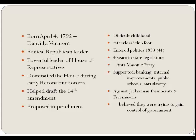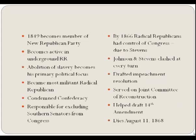Stevens had a difficult childhood: his father died when he was a baby, he was club-footed, and he was poor. He entered the political sphere in 1833, serving four years in the state legislature as a member of the anti-Masonic party. He supported banking, internal improvements, public schools, and spoke out against slavery. In 1849, Stevens was elected as a Whig to serve in the U.S. House of Representatives and advocated for tariff increases. He opposed the fugitive slave provision in the Compromise of 1850 and later joined the newly formed Republican Party.